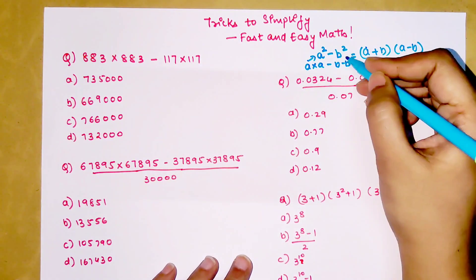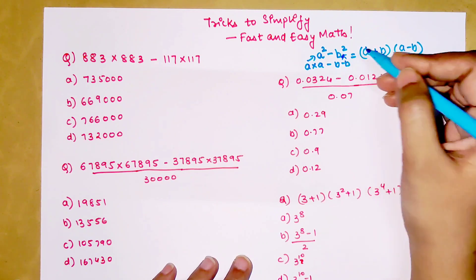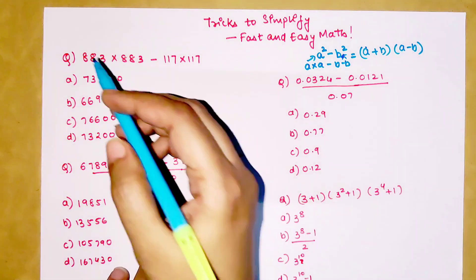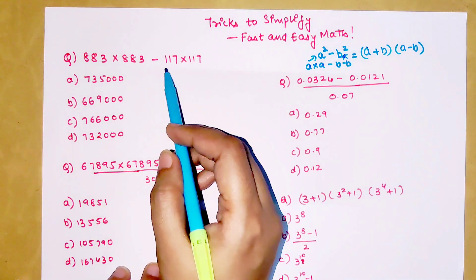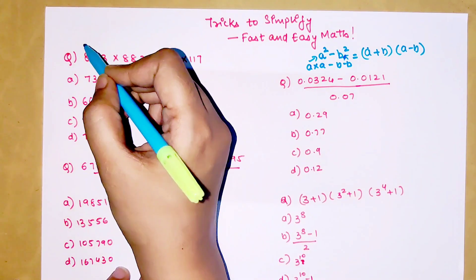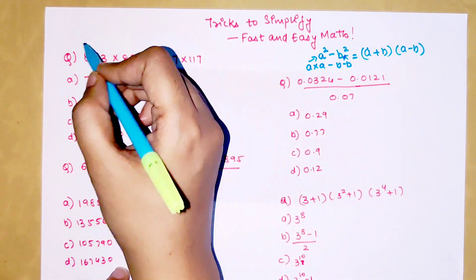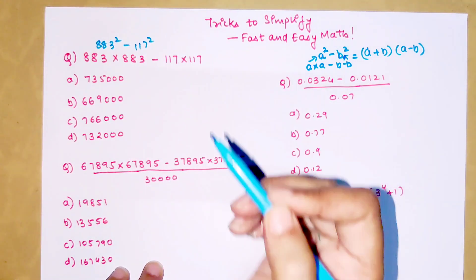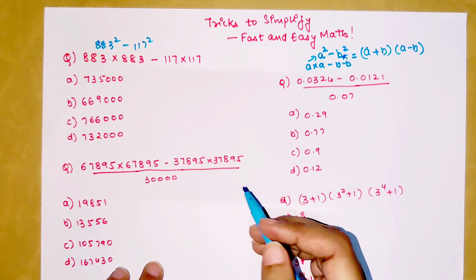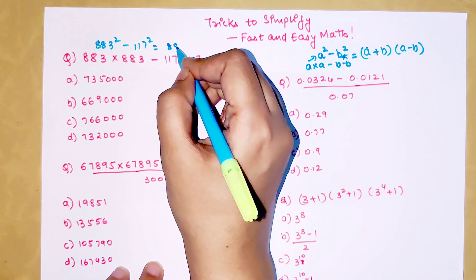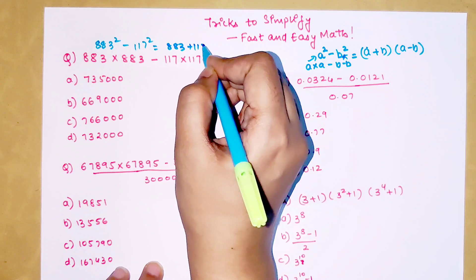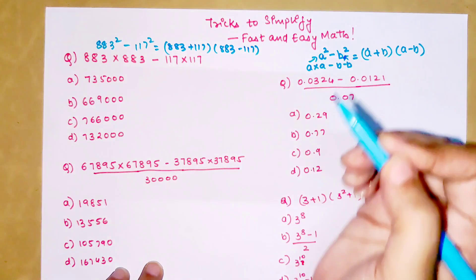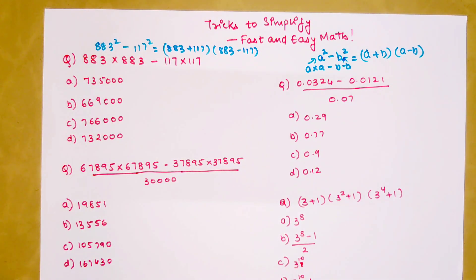It is very simple. Let's start with our first question here. It is a into b minus b into b, which is basically asking you to find 883² - 117². When expanded you will get 883 + 117 and 883 - 117.